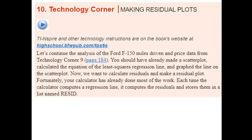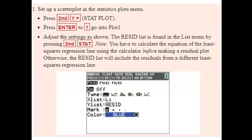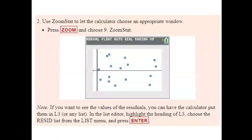To create a residual plot using technology with the Ford F-150 data already in the calculator: go to STAT PLOT, keep X List as List 1 (the explanatory variable), but for the Y List pull up the residuals. The residual command is found in the List menu (2nd, STAT), scroll to find RESID, choose that while your cursor is in the Y List area, then hit Zoom 9 (ZoomStat) and you'll see the residual plot.